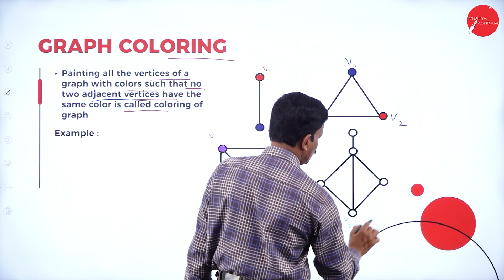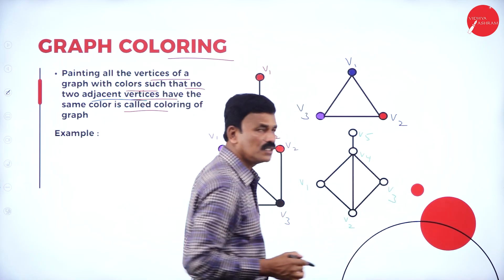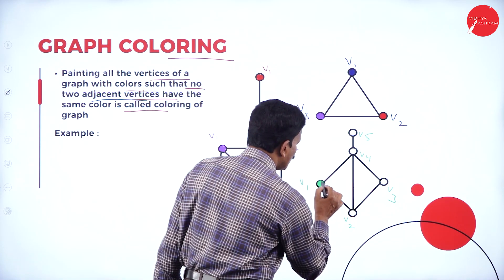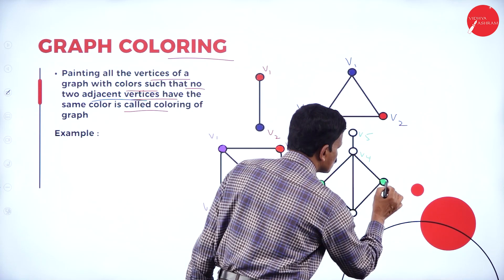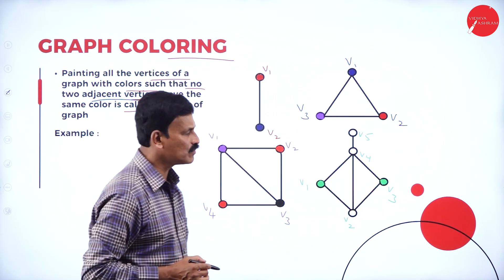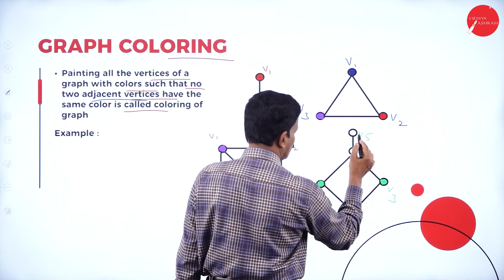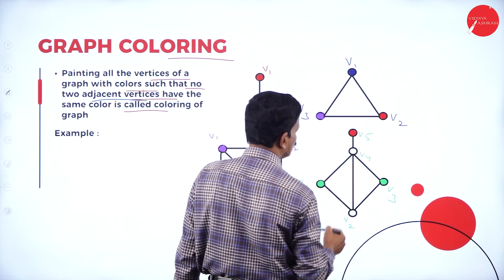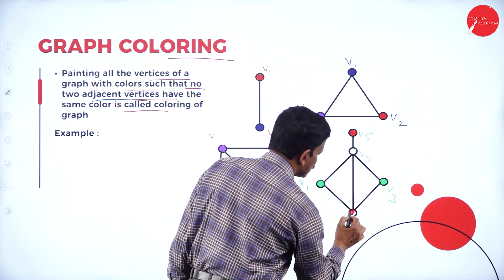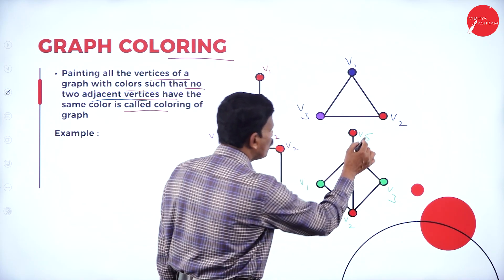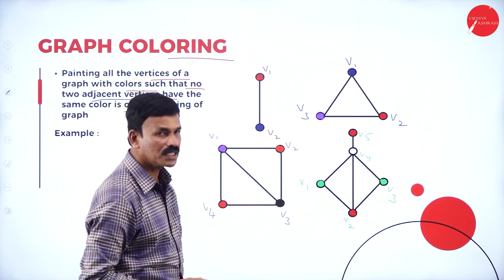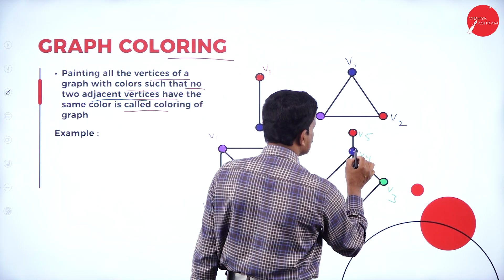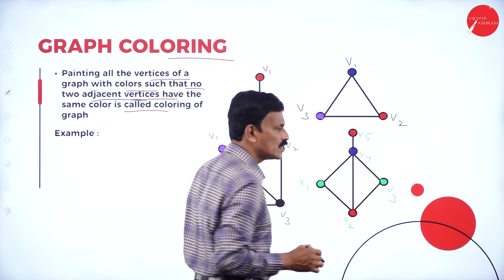Now let us represent this graph with vertices V1, V2, V3, V4, and V5. Since V1 and V3 are not connected, we can give them the same color — green. V5 and V2 are not connected, so let us represent them with red color. And V4 is connected with V5, V3, and V1, so let us represent V4 with blue color. This is how we are going to color the graph.